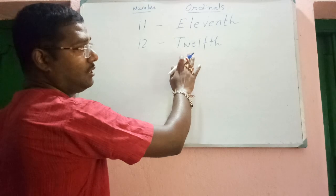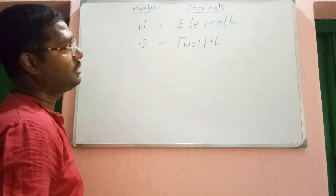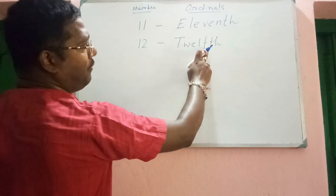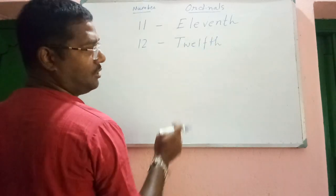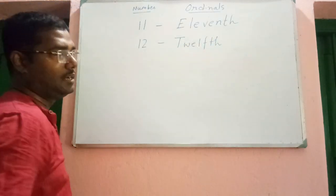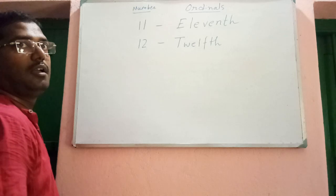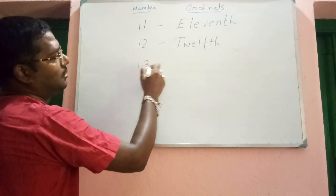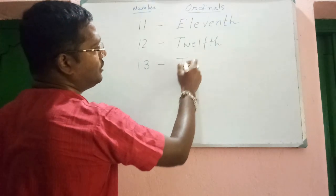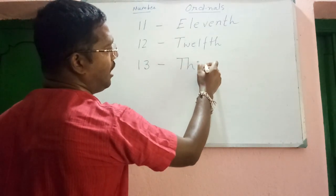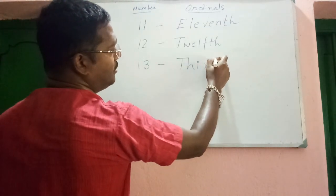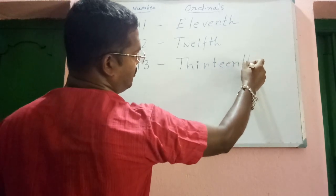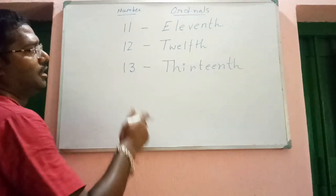Memorize this ordinal number — twelfth, T-W-E-L-F-T-H. There is something difficult, okay, catch it. Next, number is thirteen and ordinal will be thirteenth — T-H-I-R-T-E-E-N-T-H. Thirteenth.